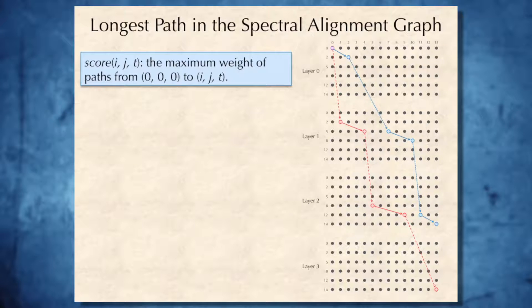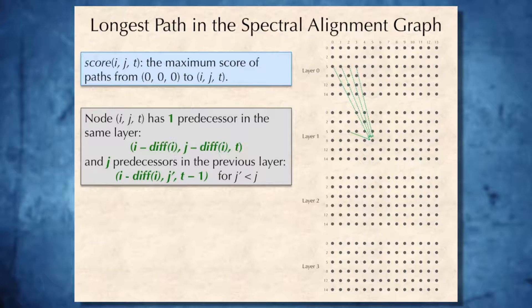Now, to solve a longest-path problem in the spectral alignment graph, we will define the variable scorer ijt, which is the maximum weight of paths from 0, 0, 0, the source of this graph, to the node ijt. And node ijt has just one predecessor in the same layer, and we can compute the coordinate of this node using the diff array. And it has j predecessors in the previous layer, and we also can compute the coordinates of this node using the diff array.